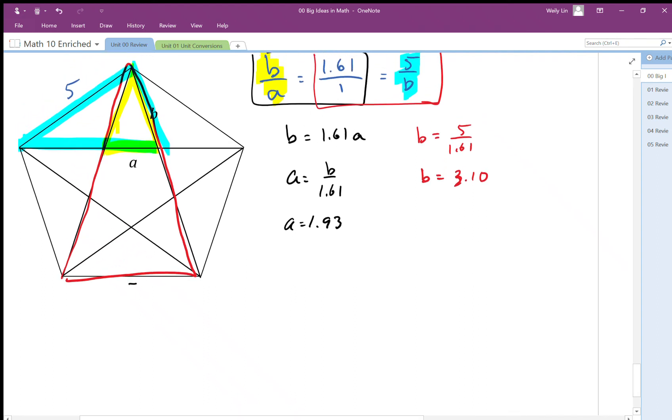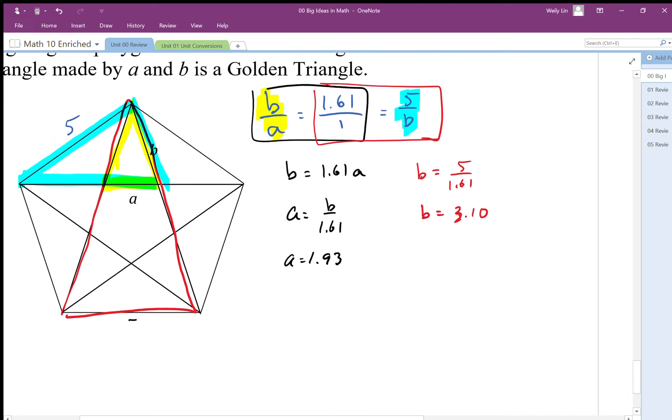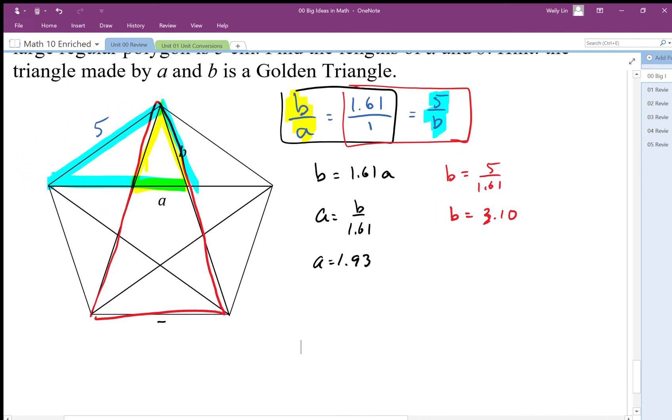There is another solution that involves knowing the quadratic formula. We're going to use the red triangle here and say that this length is b, that's a, that's b, and that's going to be 5.